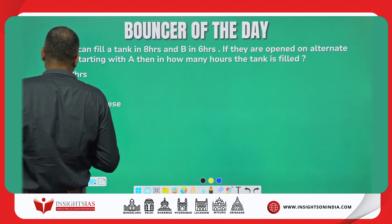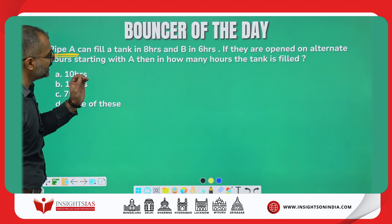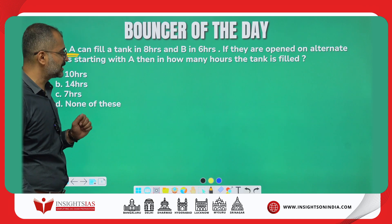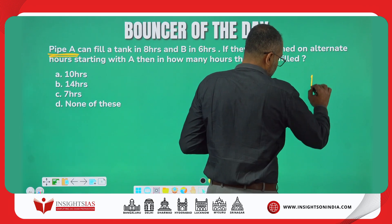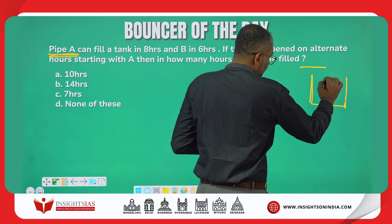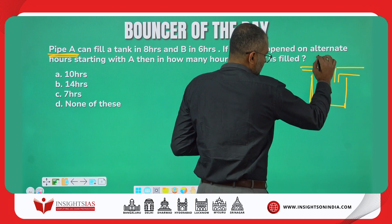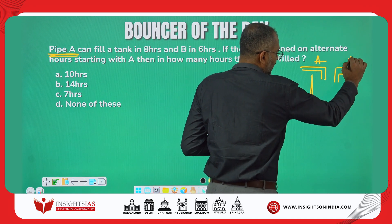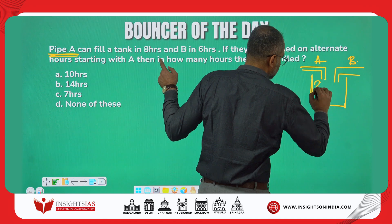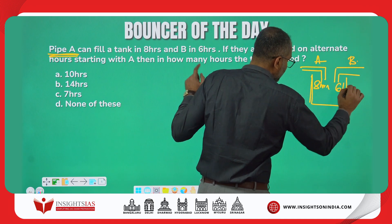The question says: pipe A can fill a tank in 8 hours and pipe B in 6 hours. Let us consider this as a tank fitted with two pipes — I will call this A and this B. A can fill it in 8 hours and B can fill it in 6 hours.